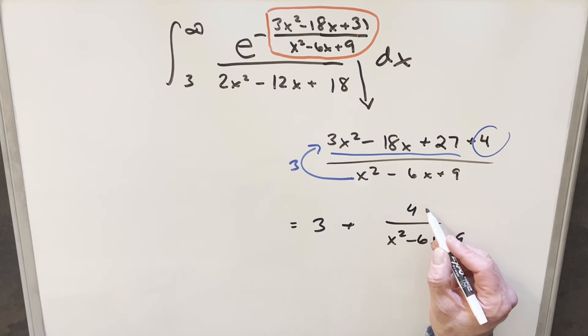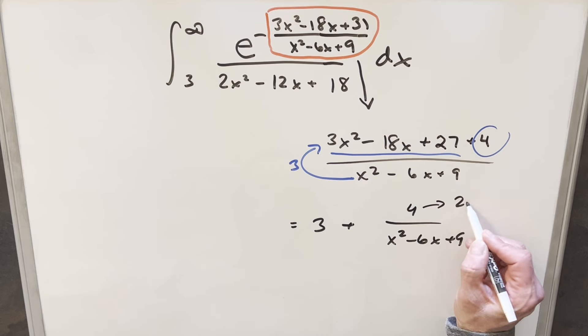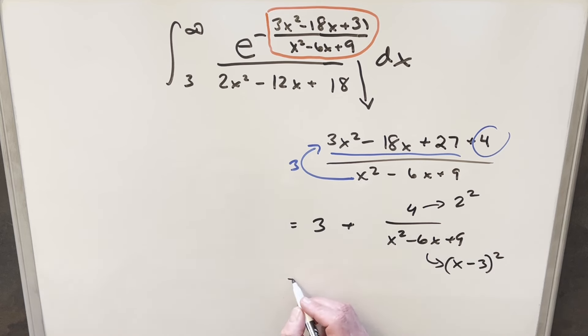But then I think I can still simplify further because for four, I could write this as two squared. And for X squared minus six X plus nine, this is going to be the same thing as X minus three squared. So rewriting again, I could express this as three plus two over X minus three all squared.